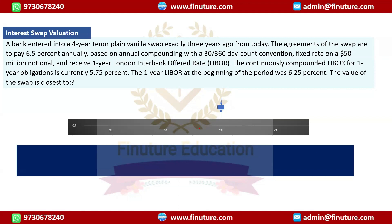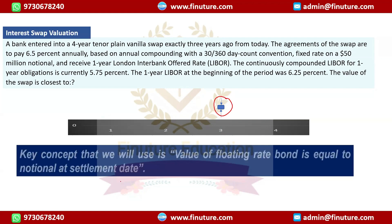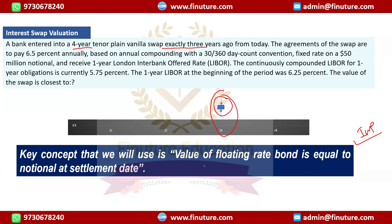Coming back: the total maturity of the swap was four years, and we are now standing at the three-year point — so only one year remains. The key concept here is: when valuing a swap, the value of a floating rate bond equals the notional at a reset date. We are exactly at a reset date right now. Please make a careful note of this — at a reset date, the value of the floating leg equals the notional. This is the critical point that will get you the answer.